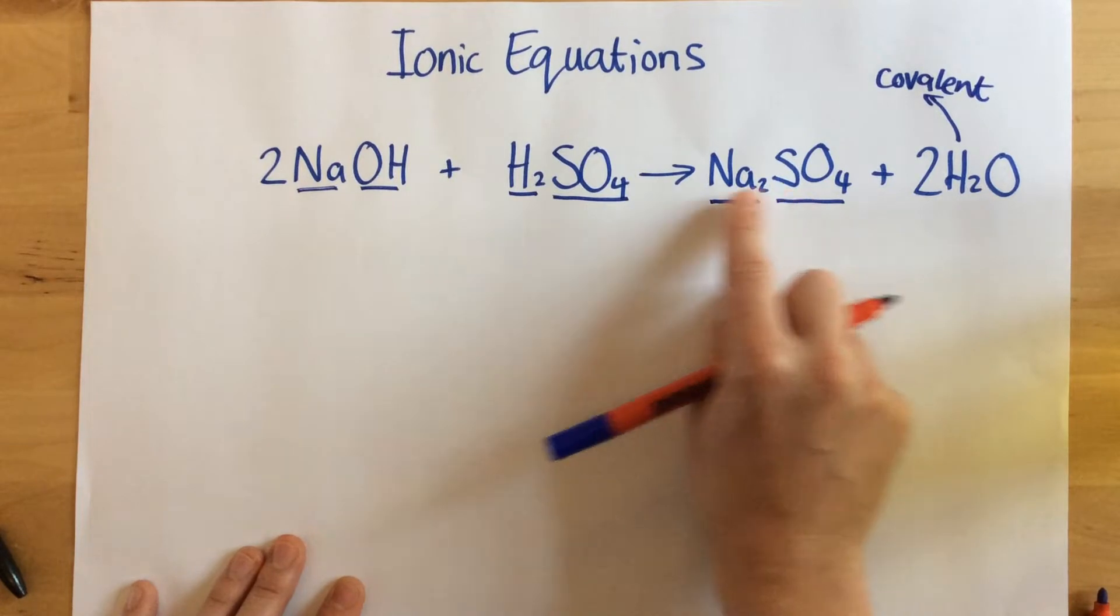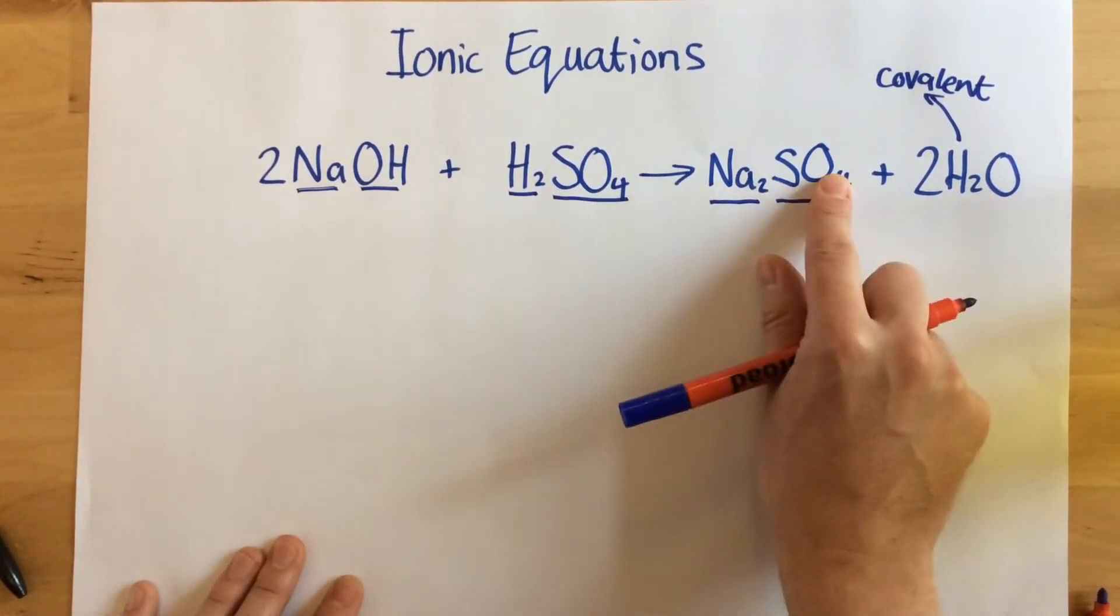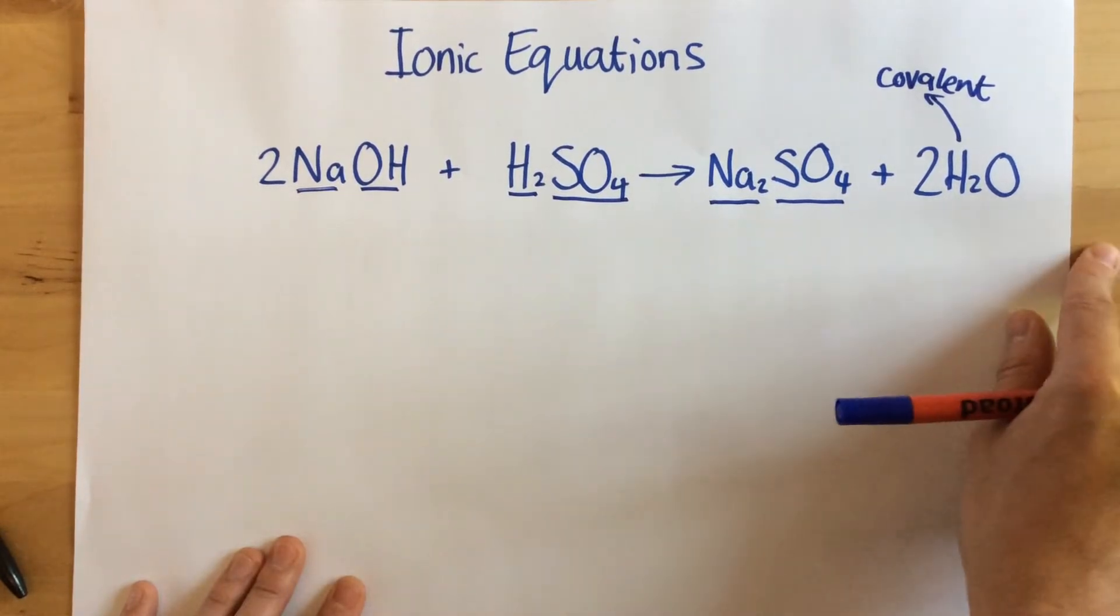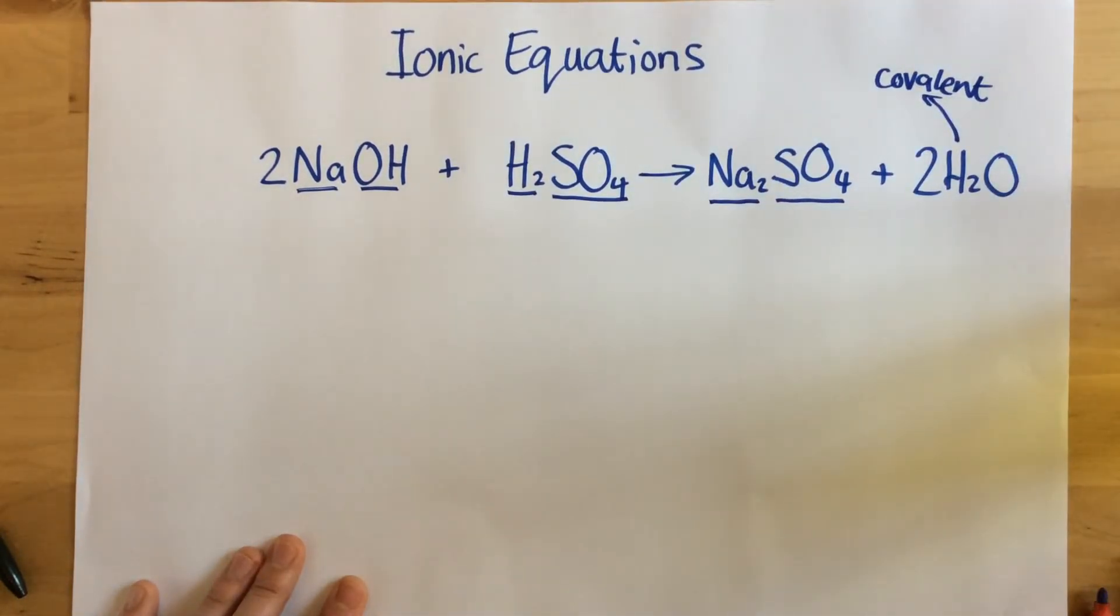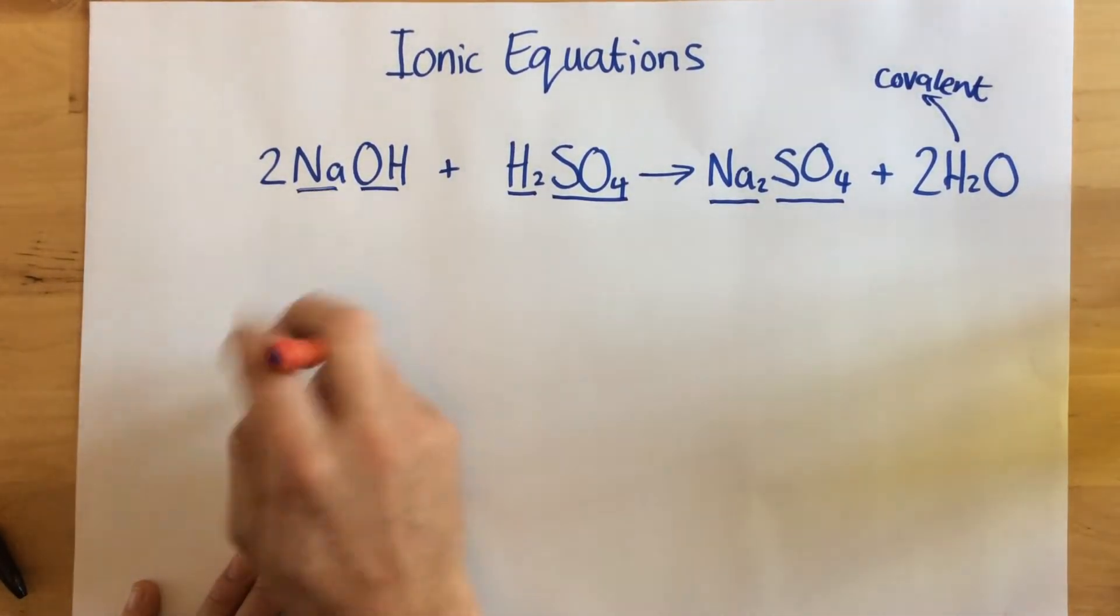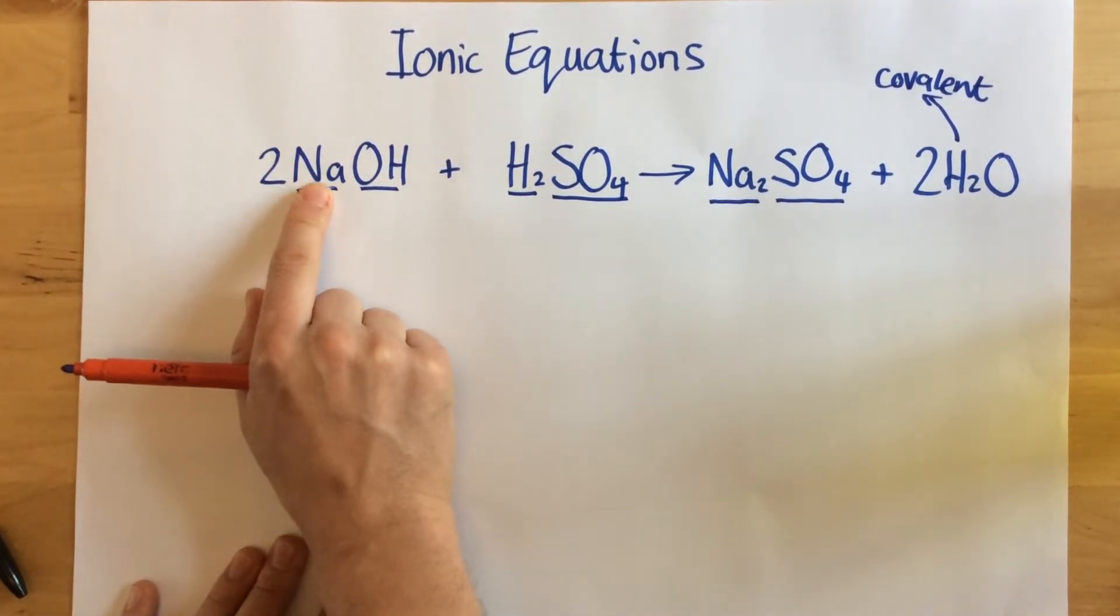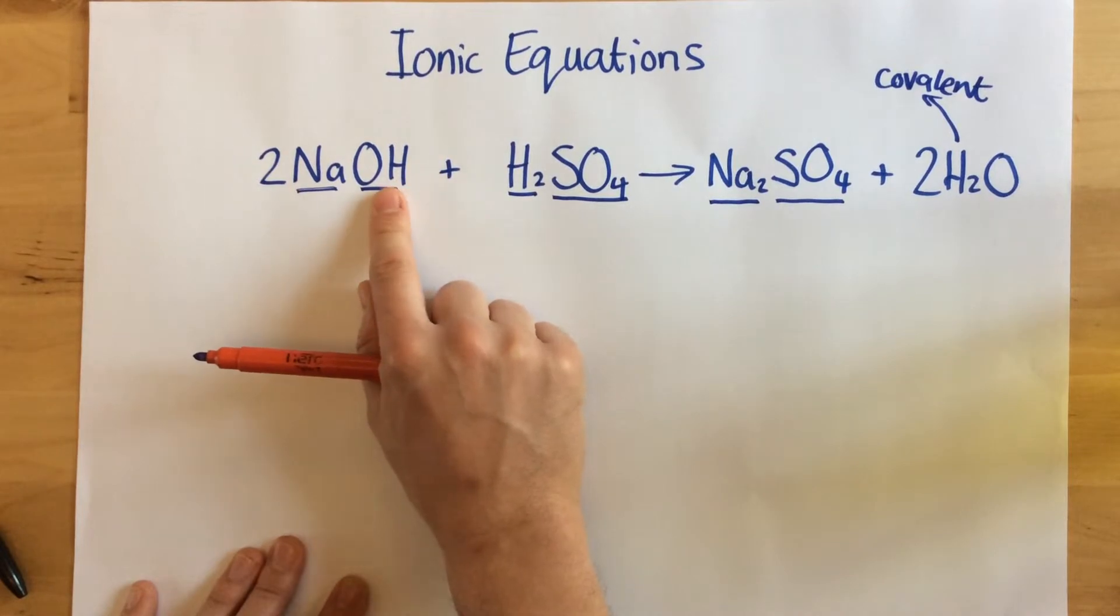Okay, so now we've established in solution which ions are going to form. What we now need to do is write out all of the different ions within this equation. To begin with, we've got two, when this is in solution, this is going to break down into two sodium ions and two hydroxide ions.